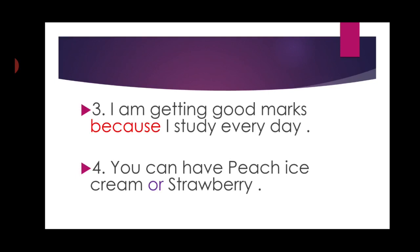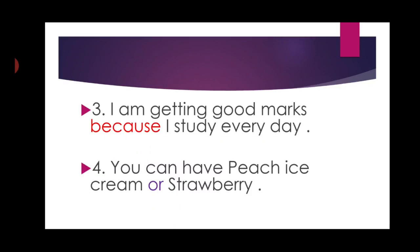Another example: 'You can have peach ice cream or strawberry.' Here I have a choice — either I want peach ice cream or I want strawberry. I have a choice, so by the word 'or' I can understand that I have to choose either peach ice cream or strawberry. Here 'or' is the conjunction word.